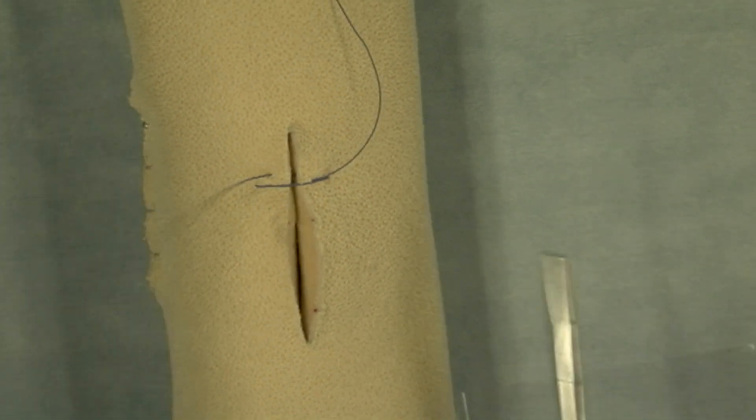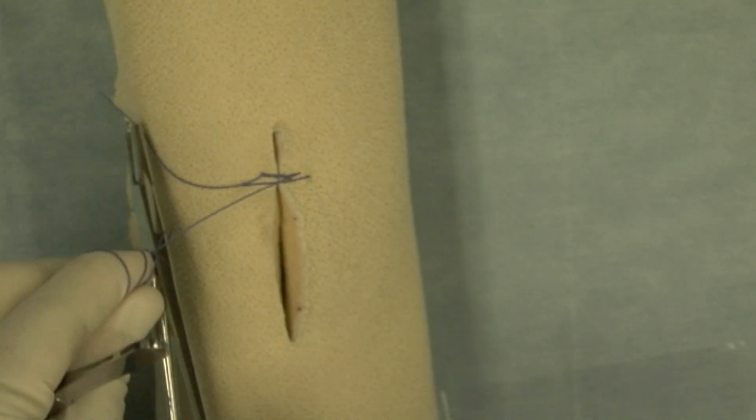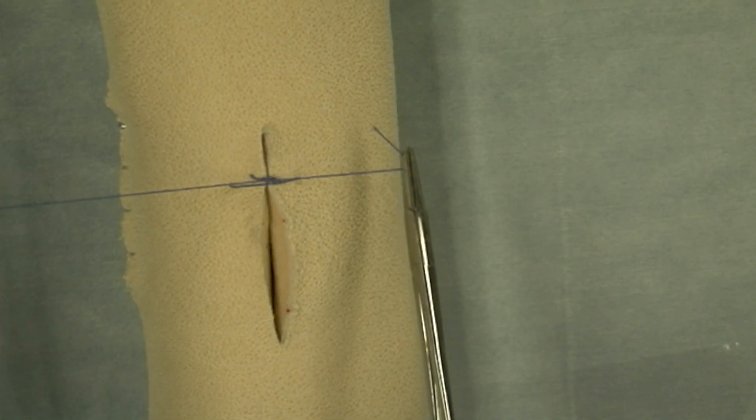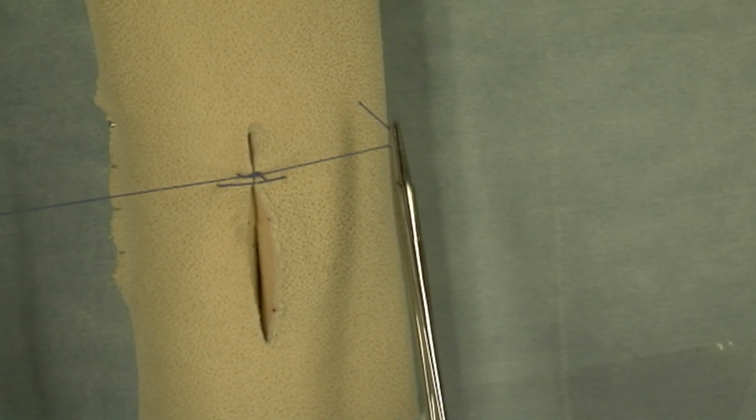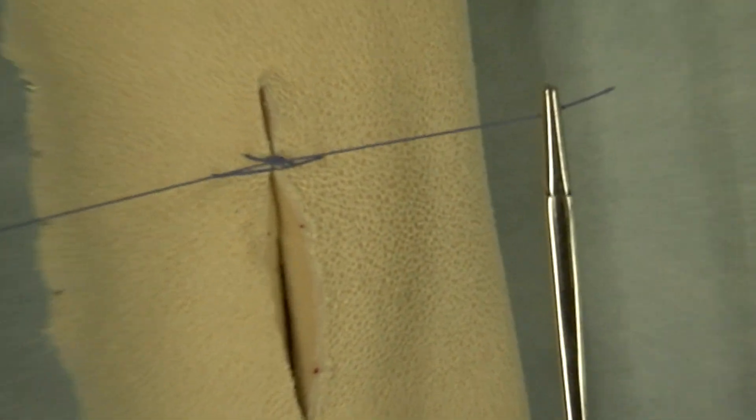So in order to get this tied properly I'm going to use a surgeon's knot comprised of a surgeon's throw followed by a simple throw. And you can see that that takes up the tension and is tied properly with the proper tension on the suture ends.